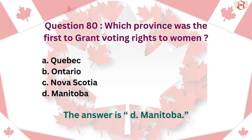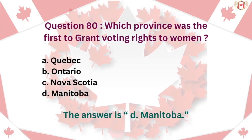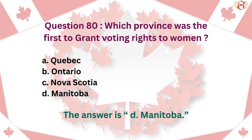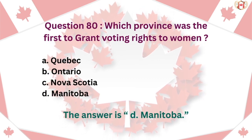Question 80: Which province was the first to grant voting rights to women? A. Quebec, B. Ontario, C. Nova Scotia, D. Manitoba. The answer is D. Manitoba.